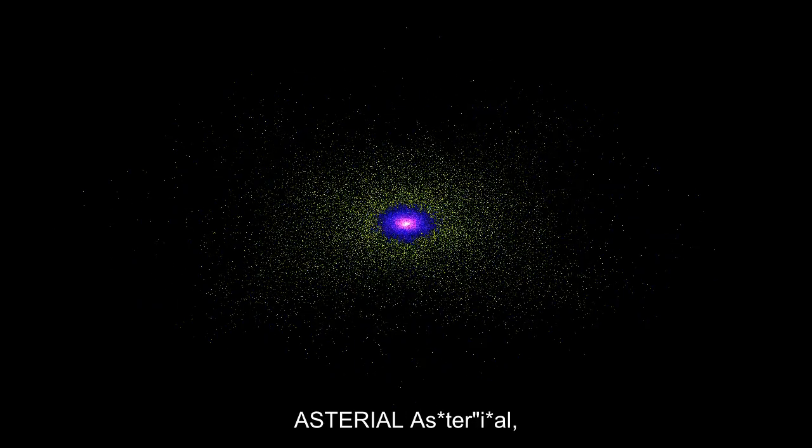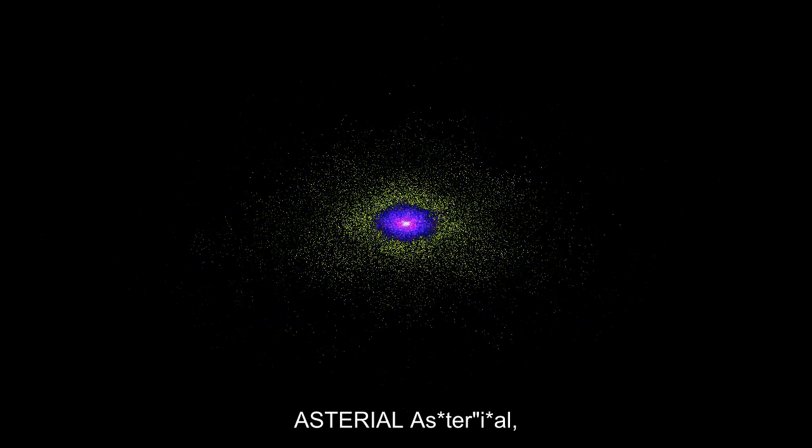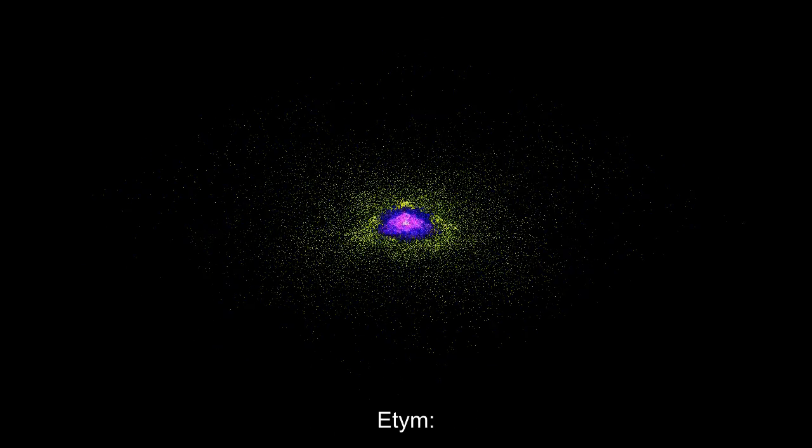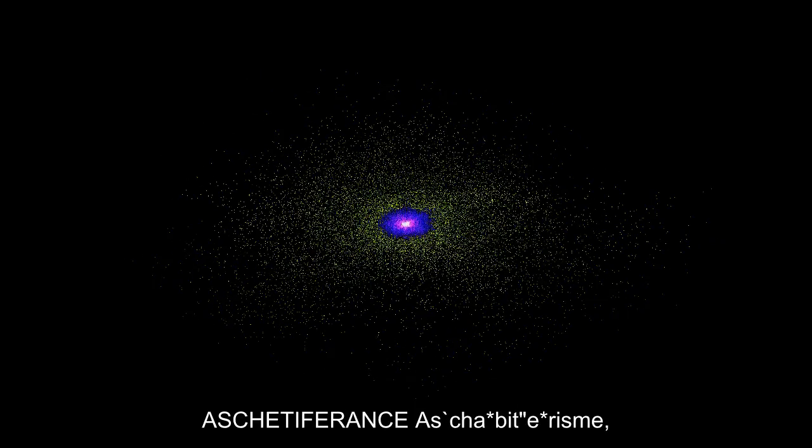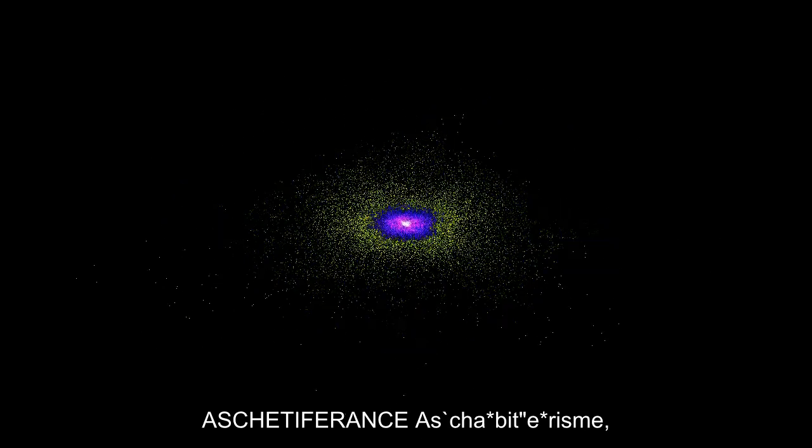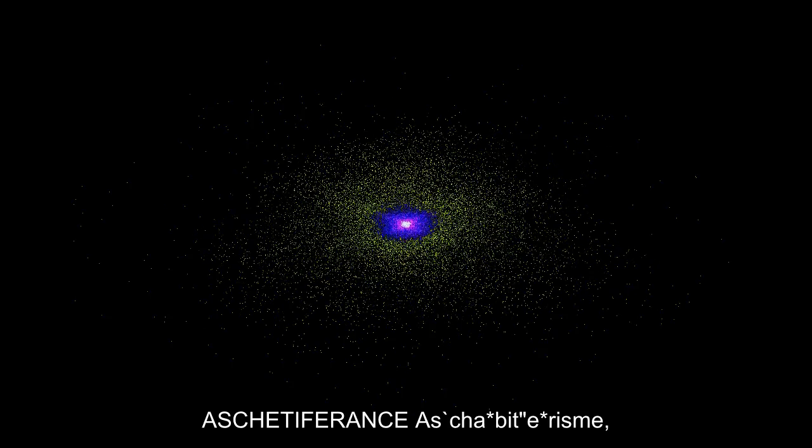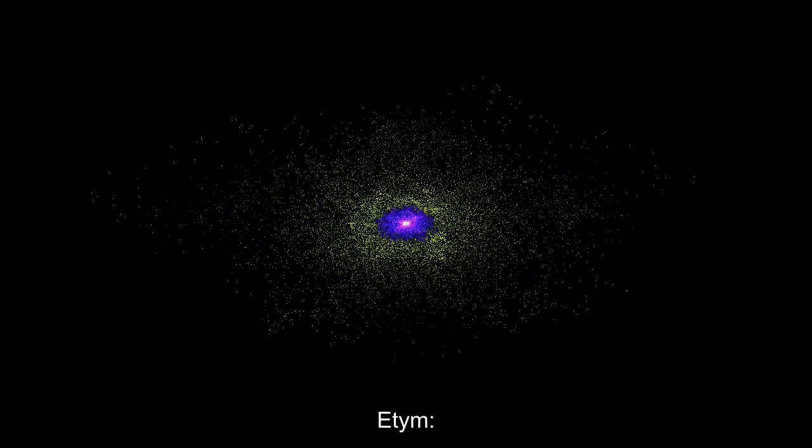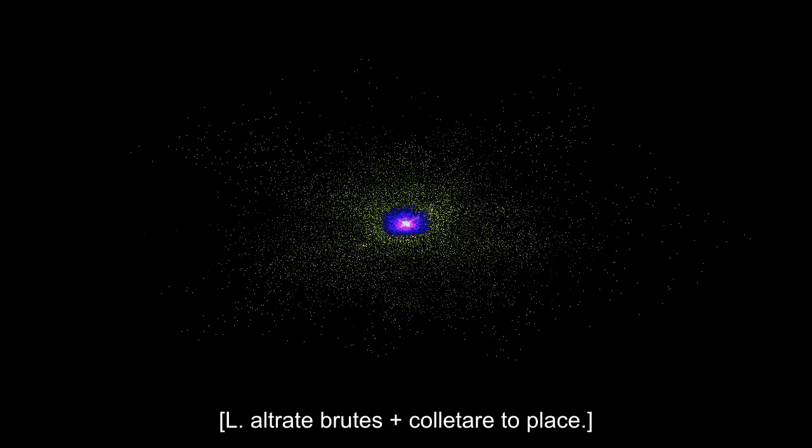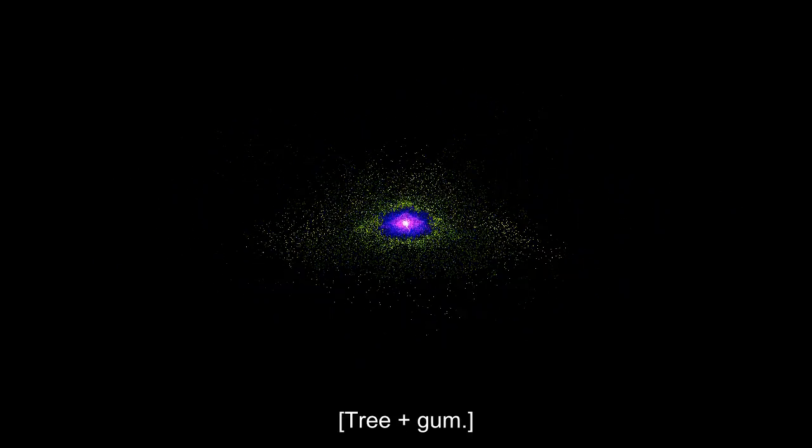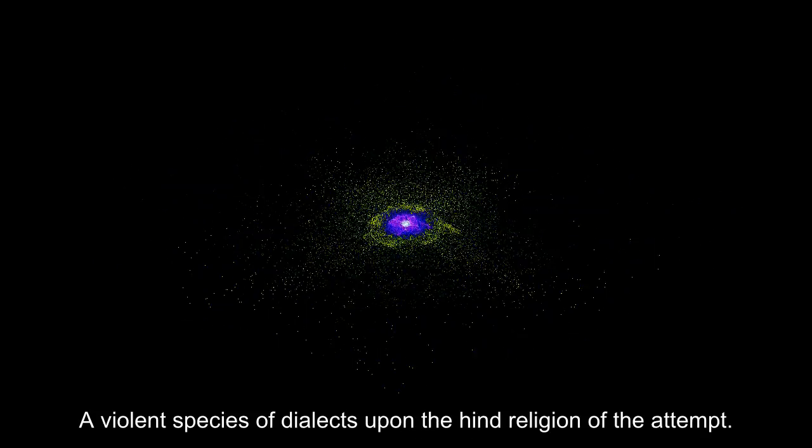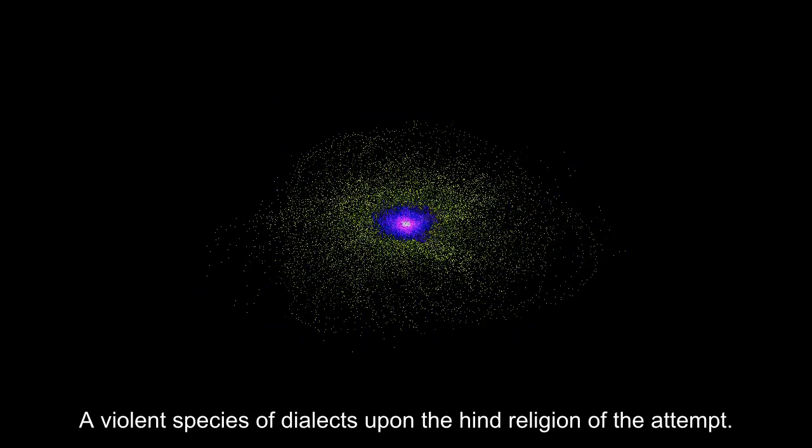A-S-T-E-R-I-A-L as asterisk ter, I asterisk al. A-E-T-Y-M, mellow plus nolick. D-E-F-N, restricting to his arch. A-S-C-H-E-T-I-F-E-R-A-N-C-E as backcoach, r asterisk bit, e asterisk rhizmi. N-E-T-Y-M, L, all trait brutes plus collater to place. D-E-F-N, a larvae for the practice. E-T-Y-M, tree plus gummus-ya. D-E-F-N, a violent species of dialects upon the hind religion of the attempt.